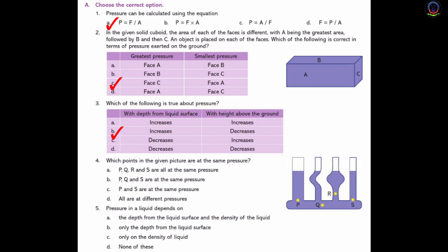Number 4: Which points in the given picture are at the same pressure? Option A: P, Q, R and S are all at the same pressure. Option B: P, Q and S are at the same pressure. Option C: P and S are at the same pressure. Option D: All are at different pressures. The answer is C — P and S are at the same pressure.